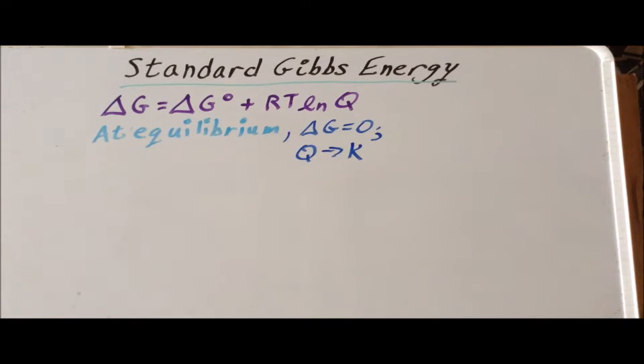Therefore, if we substitute these values into our equation, we get that zero is equal to delta G naught plus RT times the natural log of K, where K is the equilibrium constant.